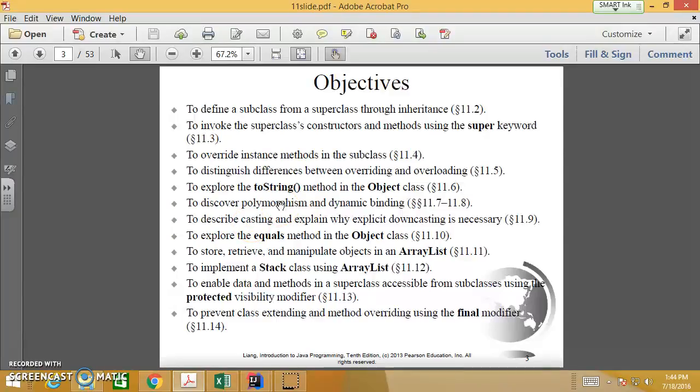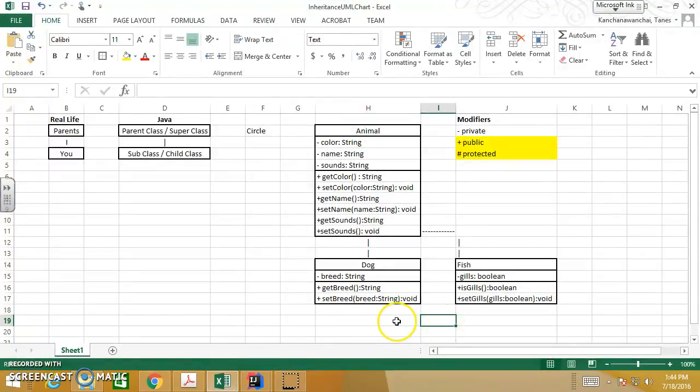Let's discover polymorphism and dynamic binding. What is polymorphism? Normally, dog is in the form of an animal. Fish is also in the form of an animal. That means objects can have many forms. An object of the dog can be - let's say - a dog.